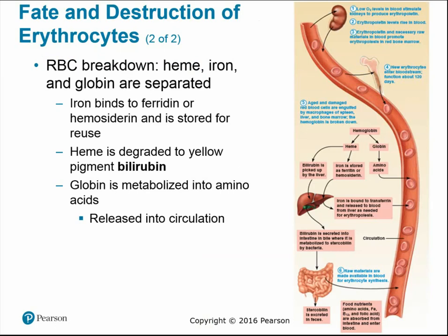As red blood cells are broken down, the heme pigment, iron atoms, and globin proteins are separated. The iron is stored for reuse. The heme pigment is broken down into a yellowish pigment called bilirubin, which is stored in the liver and used to make bile. The globin is broken down into its amino acid building blocks and released into circulation, where those amino acids can be used to make new proteins for cells.